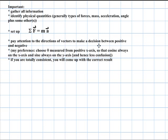Pay attention to the directions of vectors to make a distinction between the positive and the negative. So a vector that points to the left or vector component points to the left would be considered negative. My preference, choose theta measured from the positive x-axis, so that cosine always is on the x-axis and then sine always on the y-axis and therefore you introduce less confusion. If you're totally consistent, you will come up with the correct result.